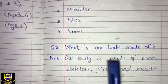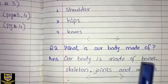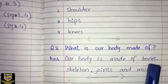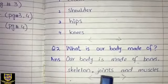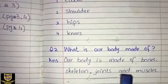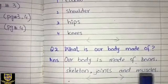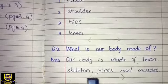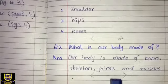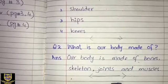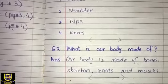We have to write the answer: our body is made of bones, skeleton, joints, and muscles. Draw the ending line. So this was your question number 2.